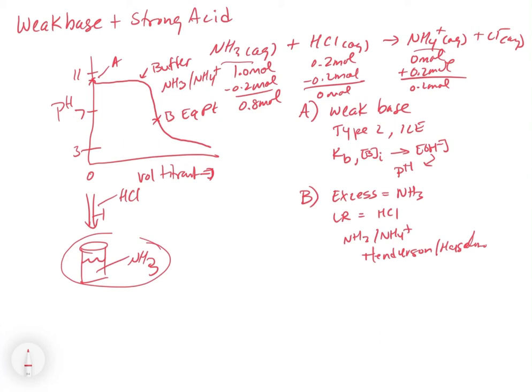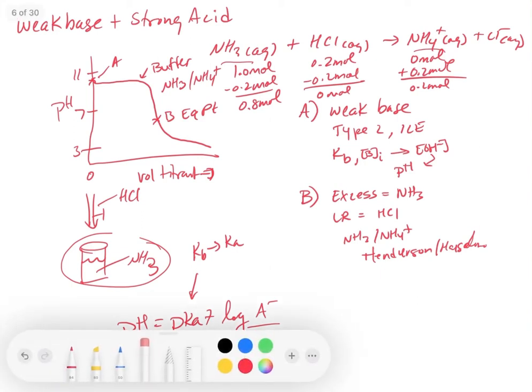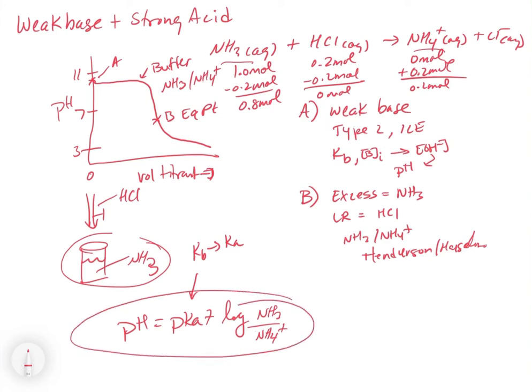We can use Henderson-Hasselbalch but we have to be a little careful. Remember Henderson-Hasselbalch has the form of pH equals pKa plus the log of A- over HA. So what we're going to do is we're going to convert KB to KA. And we got to remember what A- and HA are. In this case, the base is going to be our NH3 and the acid is going to be our NH4+. So the base is going to go on top and the acid is going to go on the bottom. If you use this form with the KA and the concentration and the moles of the NH3 and the moles of the NH4+ you can easily get any pH in the buffer region from that.